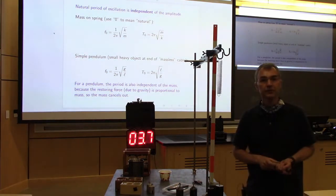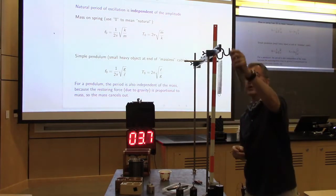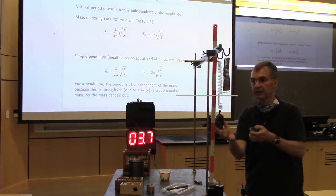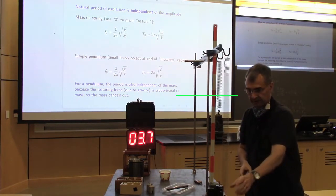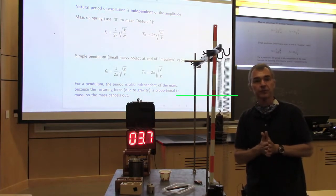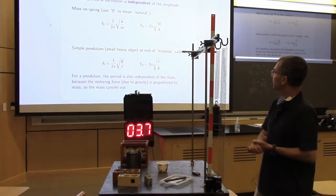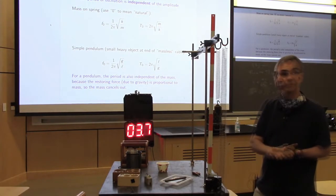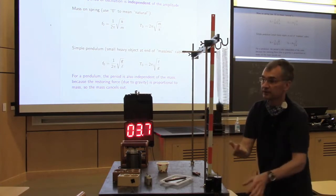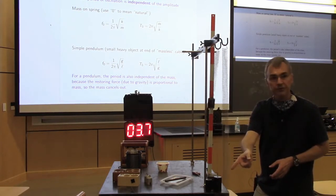Now let's try varying the spring constant. The easiest way to see that two spring constants are different is to attach the same mass to both springs and see what happens. Here in each case is a 500-gram mass attached to our first spring and to our second spring. This second spring is much less stiff — a less stiff spring has a smaller spring constant, which gives a longer period of oscillation, or a smaller frequency. So let's see what happens when we start these two bobs oscillating. This one is much slower than this one — the period of oscillation is longer for the less stiff spring.